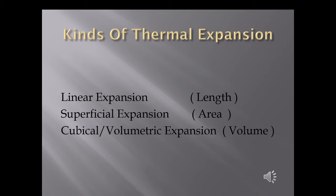Now the question arises: how many kinds of thermal expansion are there? We have basically three kinds. Number one: linear expansion — change in length due to heating. Number two: superficial expansion — change in area due to heating. Number three: cubical or volumetric expansion — change in volume due to heating.